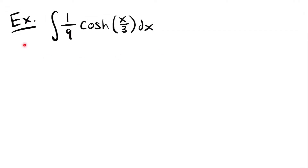Welcome back. Let's start with this example. We have the integral of 1 divided by 9 times hyperbolic cosine of x divided by 3, times dx. To integrate this function, we're going to need a particular integration rule for the hyperbolic cosine function.